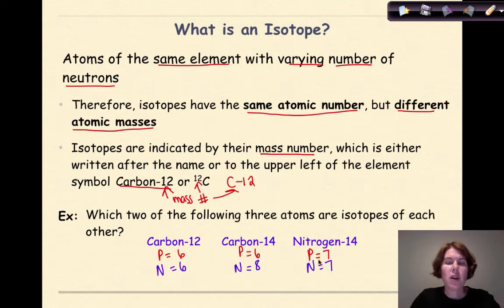Now to figure out which ones are isotopes, I need the same atomic number or number of protons, but different number of neutrons. For Carbon-12 and Carbon-14, they have the same number of protons but the number of neutrons is different. Carbon-12 has 6 neutrons while Carbon-14 has 8. Nitrogen-14 is not an isotope of these because it doesn't have the same number of protons, therefore it's not the same element. So Carbon-12 and Carbon-14 are isotopes of each other.